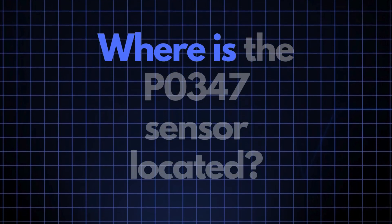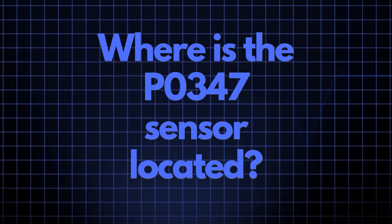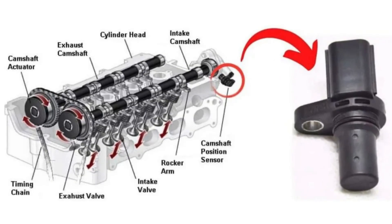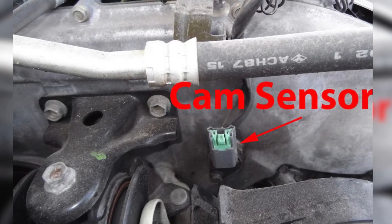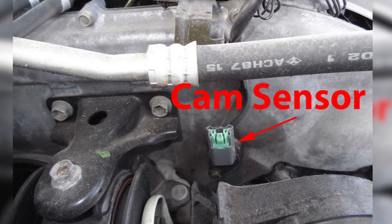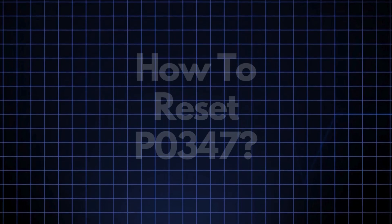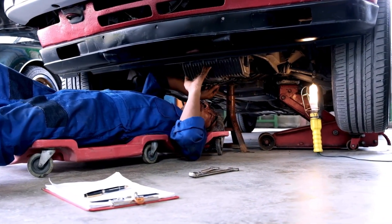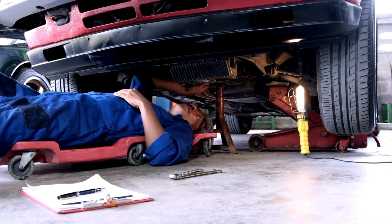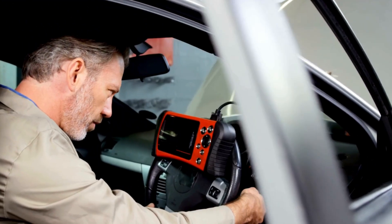Now, where exactly is the P0347 sensor located? The camshaft position sensor responsible for triggering the P0347 code is usually positioned close to the camshaft. Its exact location can vary depending on your vehicle's make and model, but you'll typically find it either on the valve cover or directly in the cylinder head. Sometimes error codes like P0347 appear due to recent maintenance or temporary glitches, and they may clear up after an OBD2 reset.